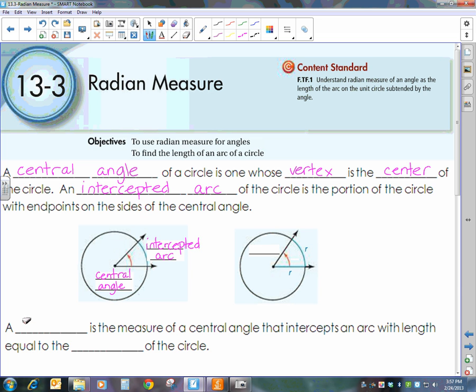Now, that new unit of measure that I was just showing you with the pie is what we call a radian. It is a different unit of measure for angles, just like we have a different unit of measure for length. We can use feet, we can use inches, we can use meters or centimeters. A radian, and that's what this is demonstrating right here, is the measure of a central angle that intercepts an arc with the length equal to the radius of the circle. So whenever the radius is the same as the arc that intercepts, then we actually have a radian.